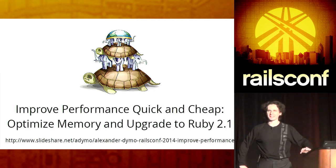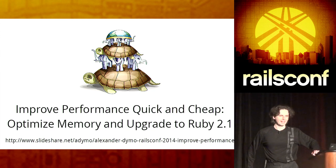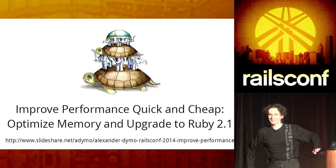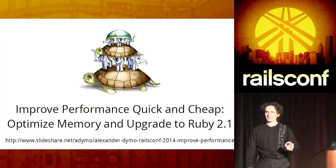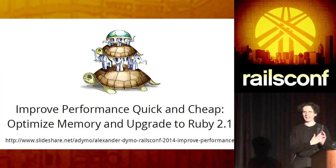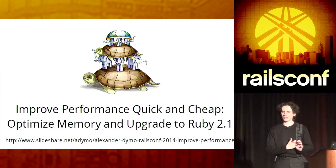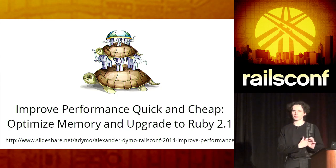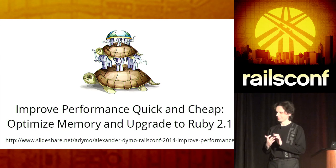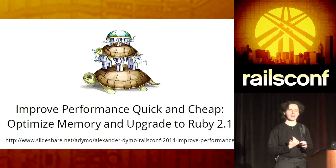Ruby was slow, but it's not slow anymore unless you allocate a lot of memory, which pretty much every application out there does. And this is why your applications are slow. It's not because Ruby is slow. 2.1 is extremely fast, but it's because you allocate memory.